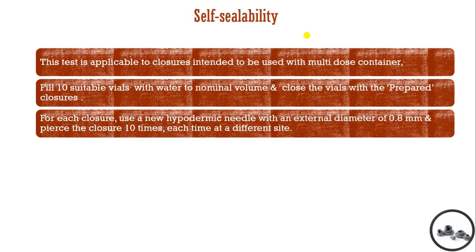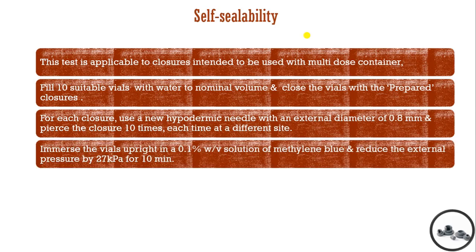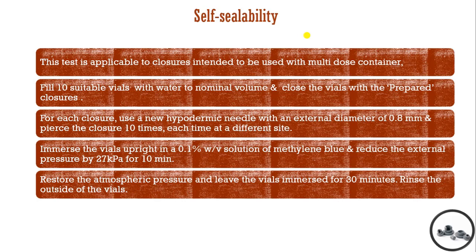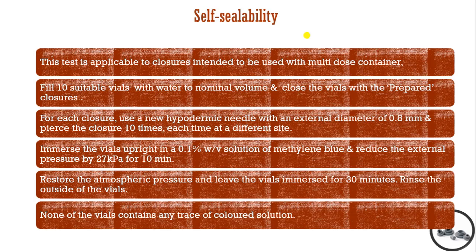For each closure, using a hypodermic needle with an external diameter of 0.8 mm, we pierce the closure 10 times, each time at a different site. We immerse the vial in a 0.1% w/v solution of methylene blue and reduce the external pressure to 27 kPa for 20 minutes. Then we restore atmospheric pressure, leave the vials immersed for 30 minutes, and rinse the outside of the vial. None of the vials should contain any trace of colored solution.